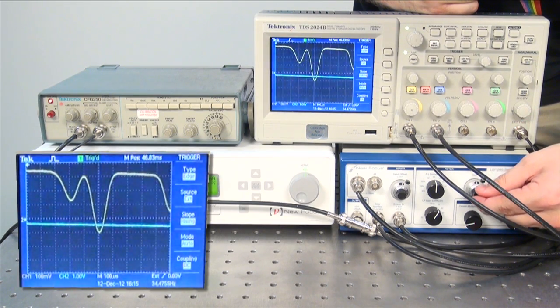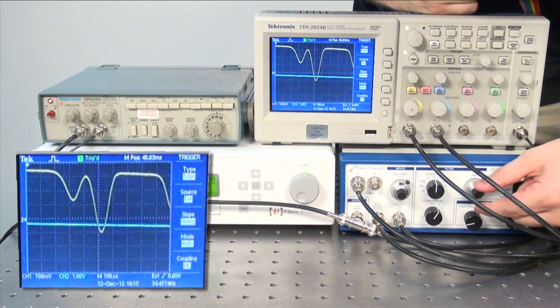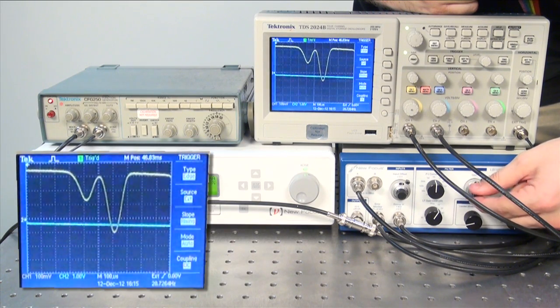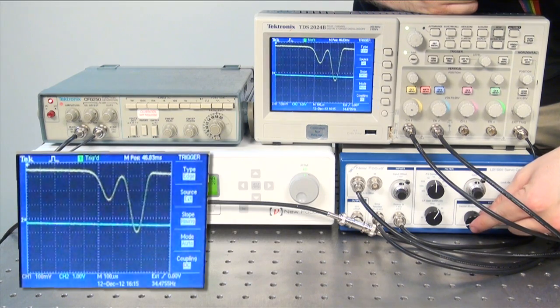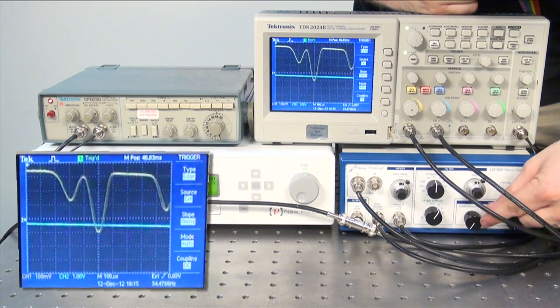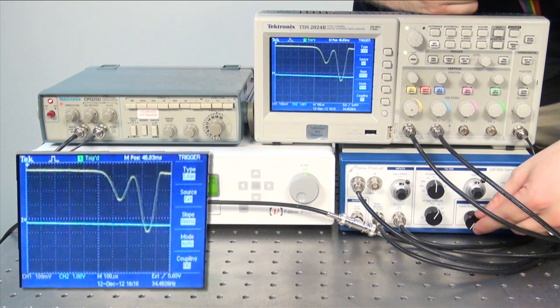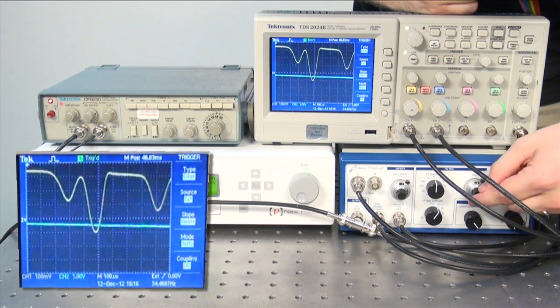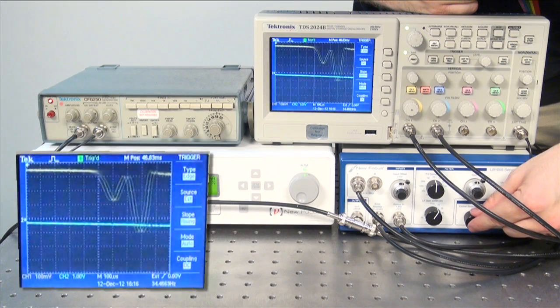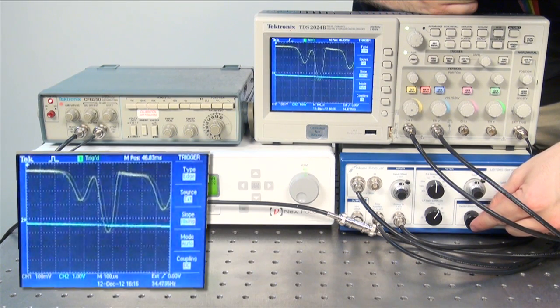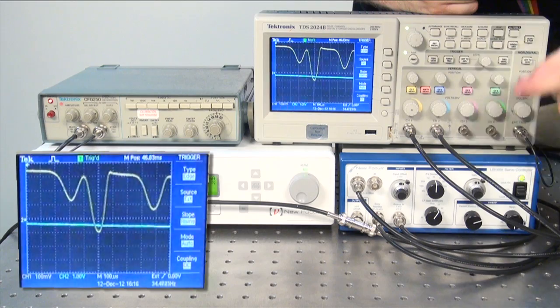Slowly turn the gain up from zero. The signal will become distorted. One edge of the absorption will become steeper, while the other will become more flat. As you raise the gain, you may need to recenter using the center knob.